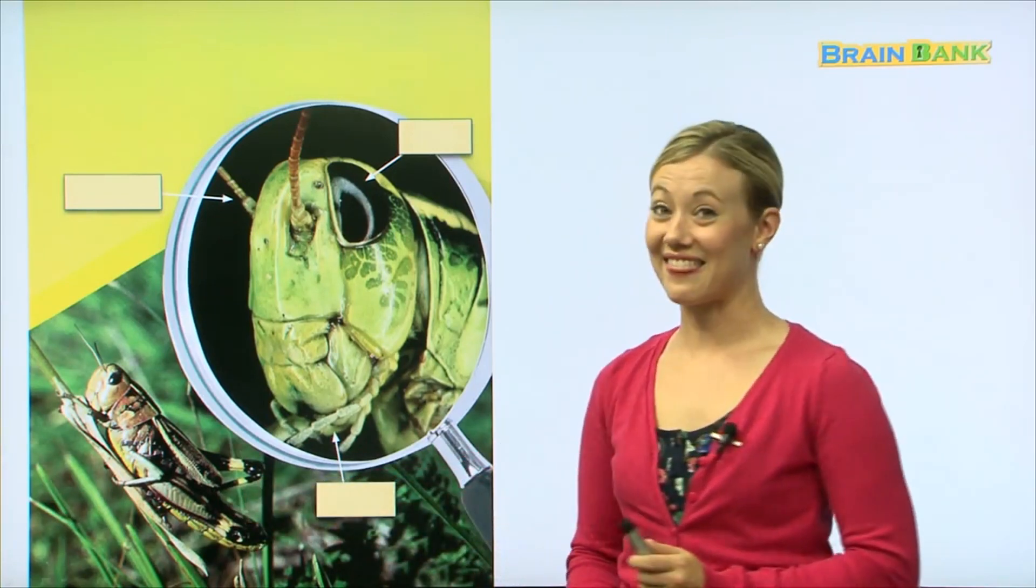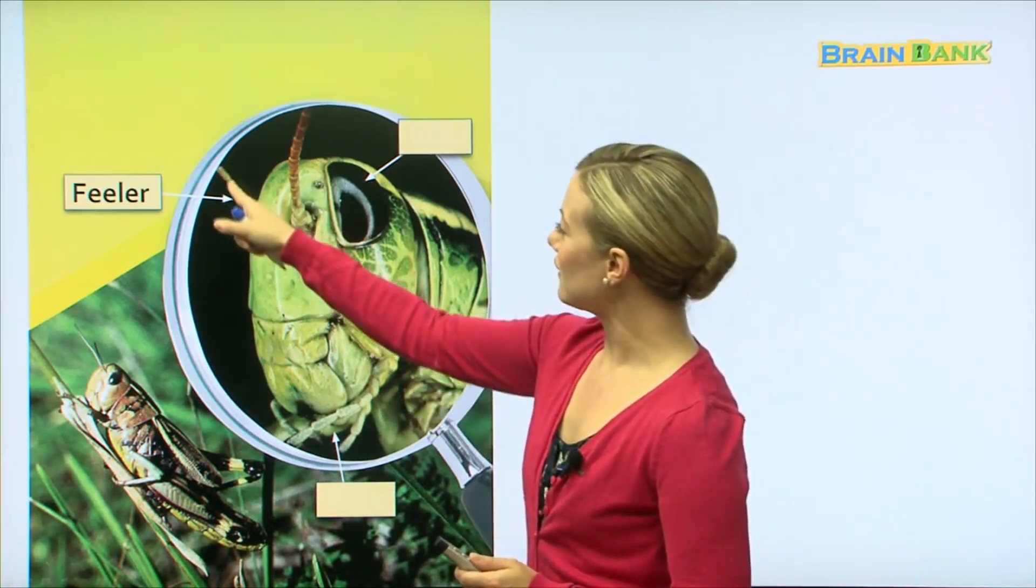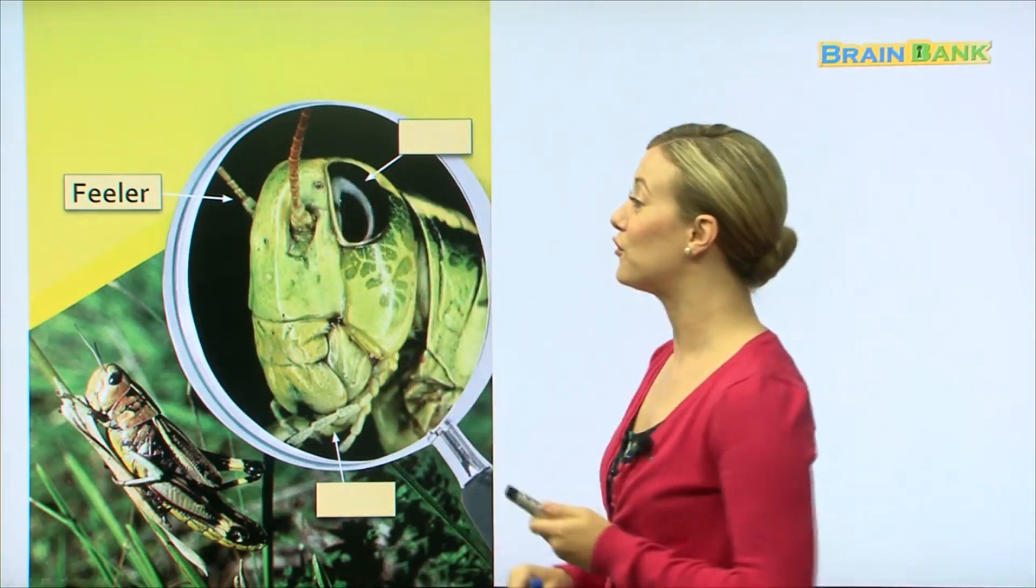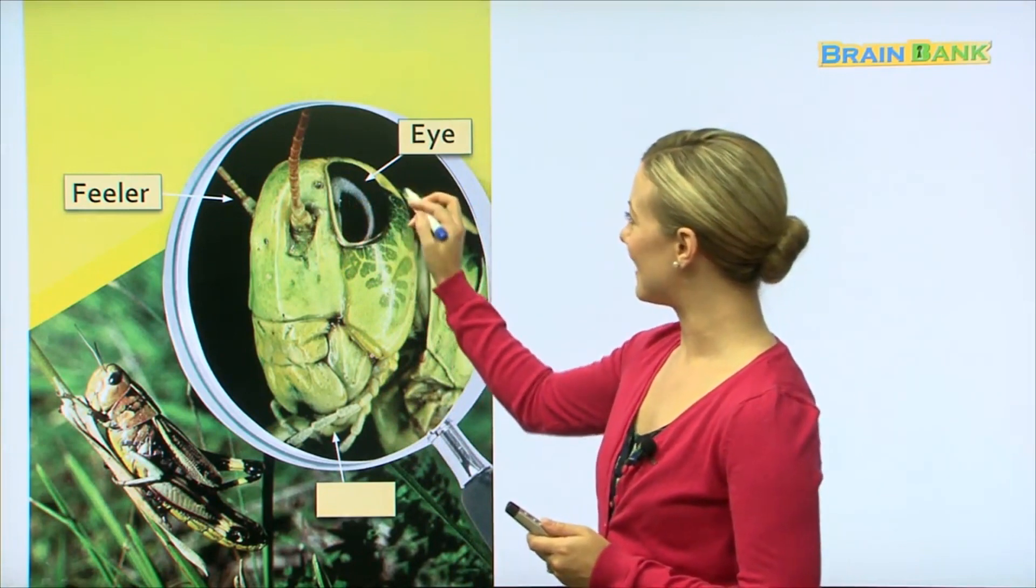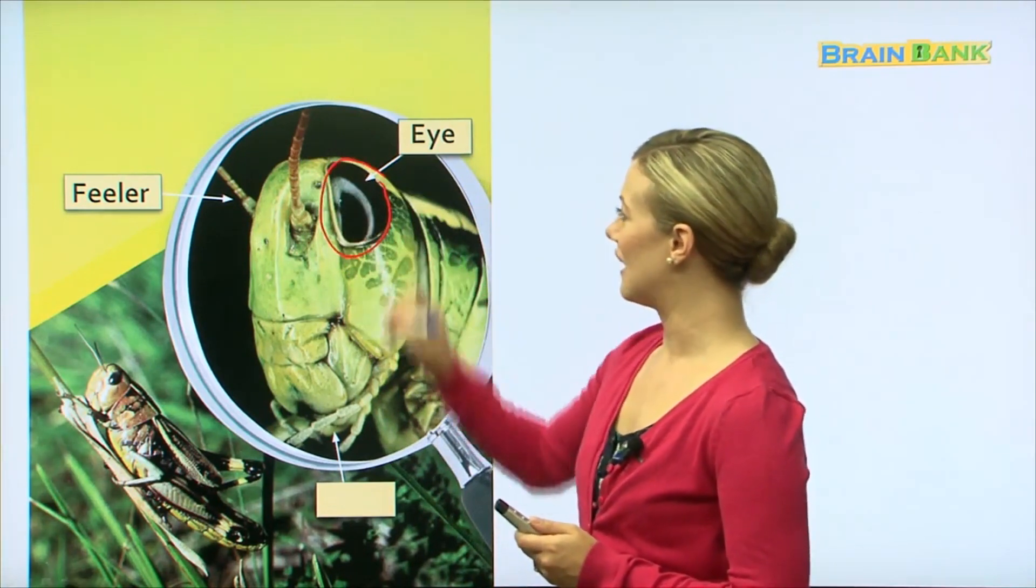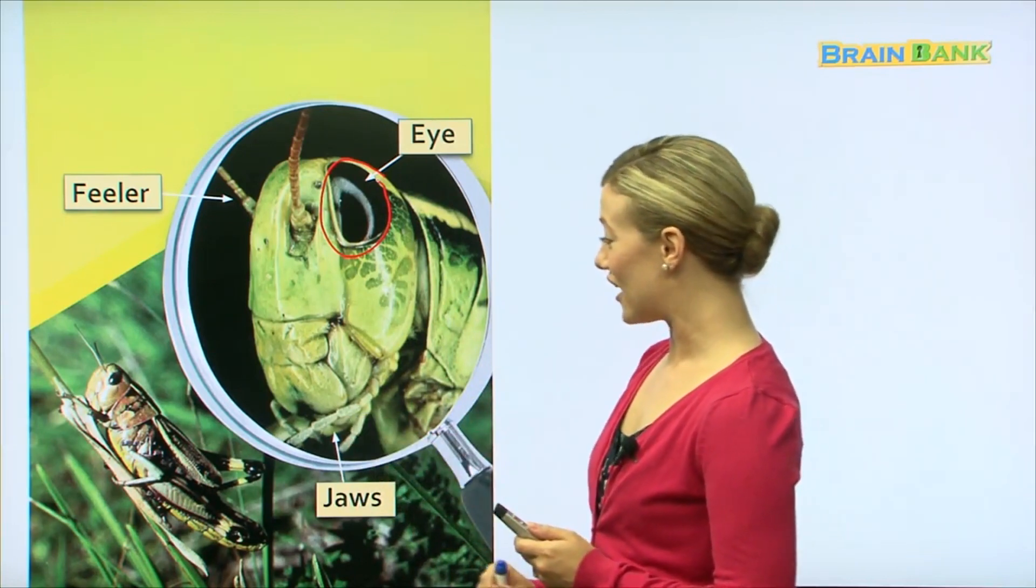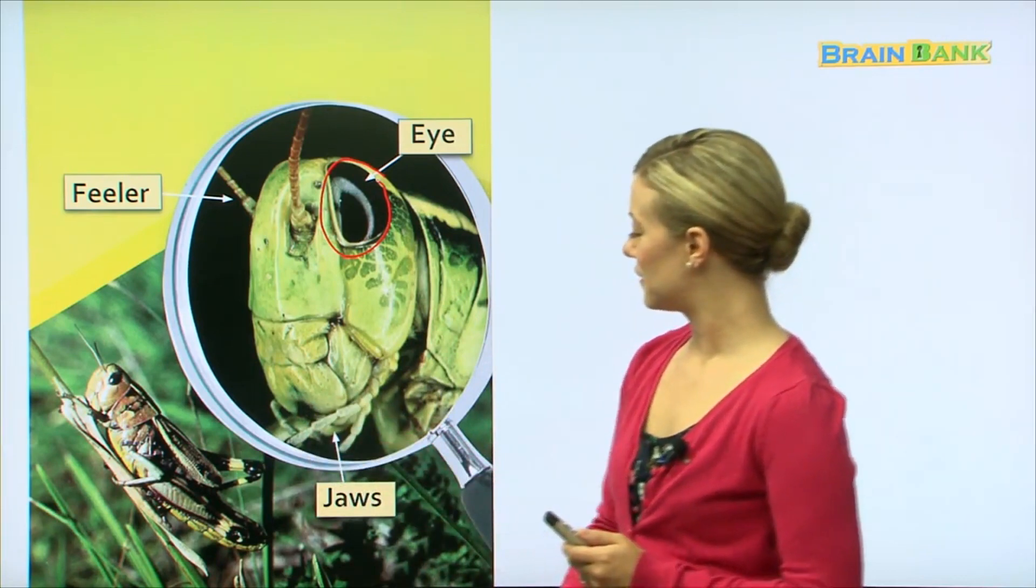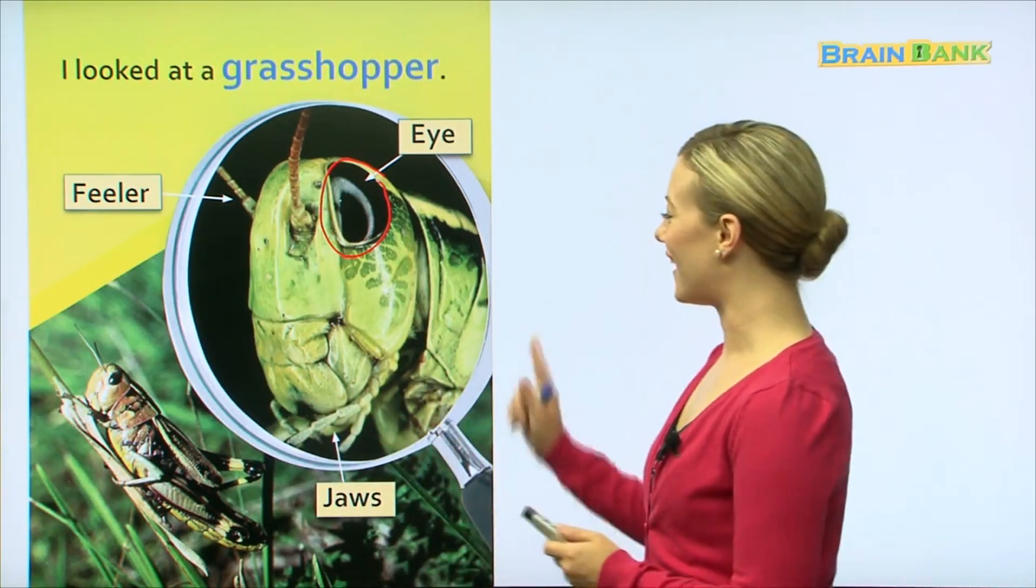Okay, here we have another insect. Does anyone know what insect that is? I think I know, but let's see if you can guess. Feelers - so these things that are coming out of his head are feelers. That big black thing, this is the eye. Oh, he's looking at us. And jaws - so this one has another mouth down here.